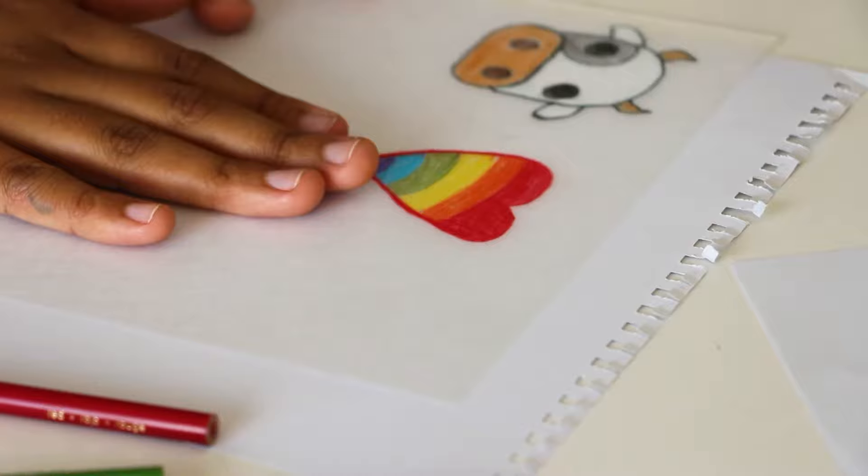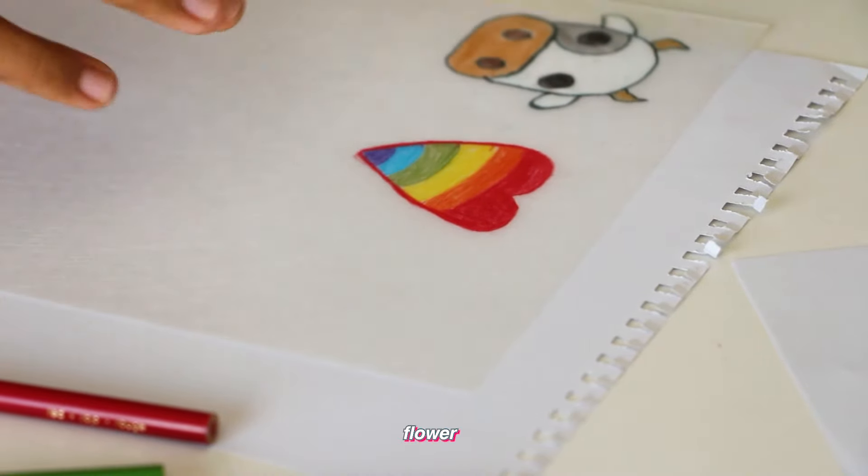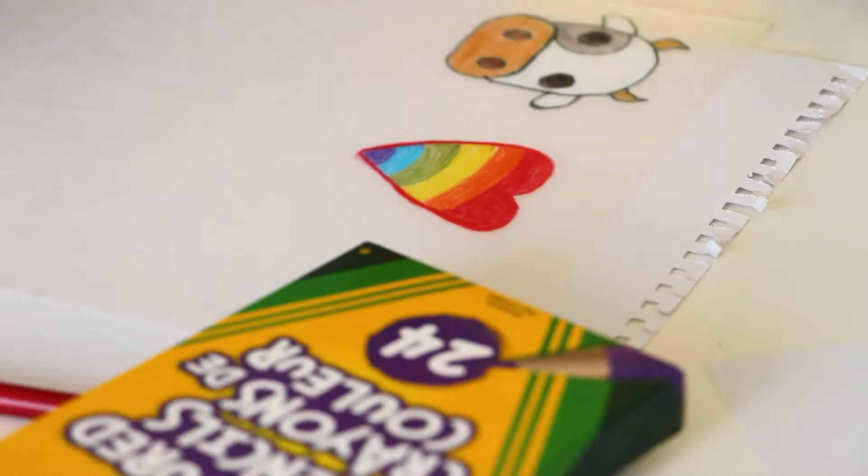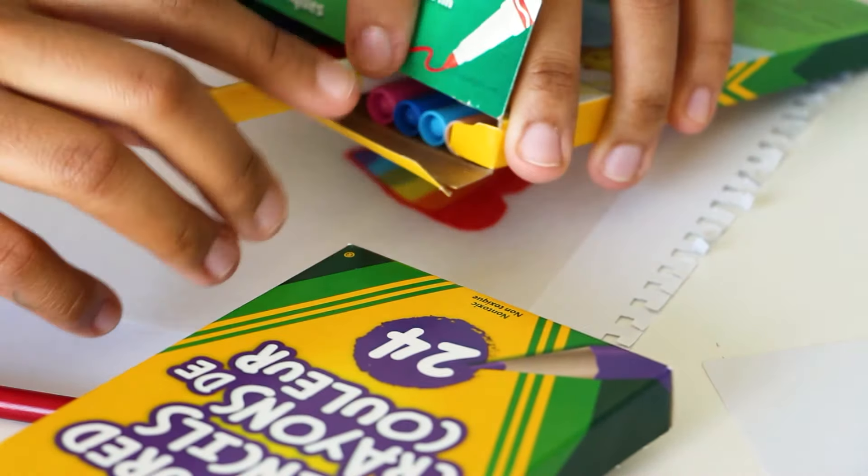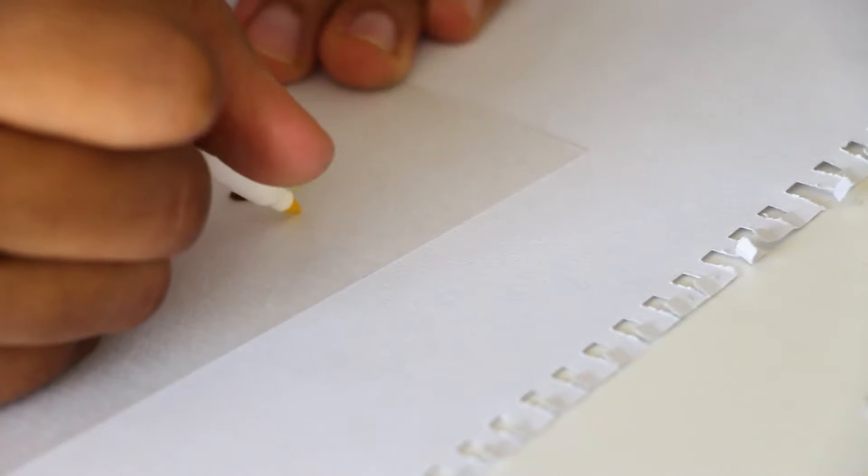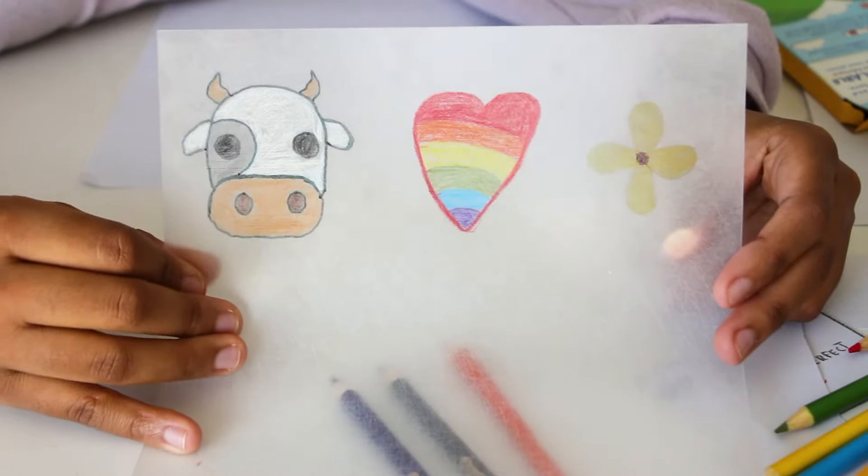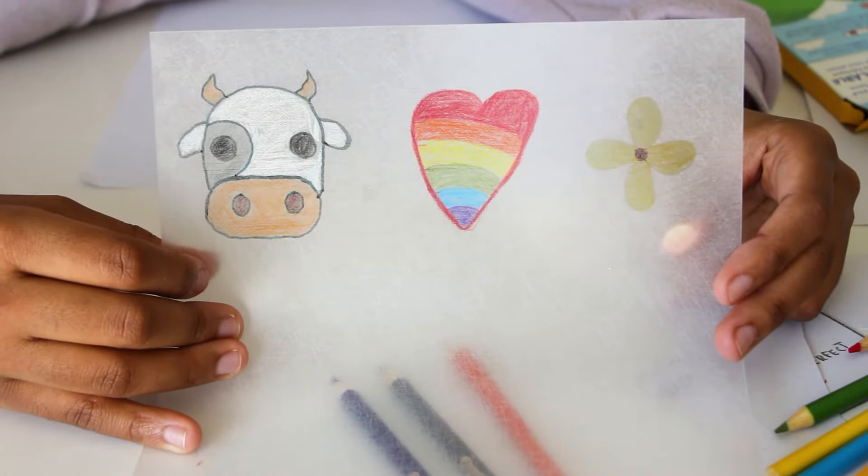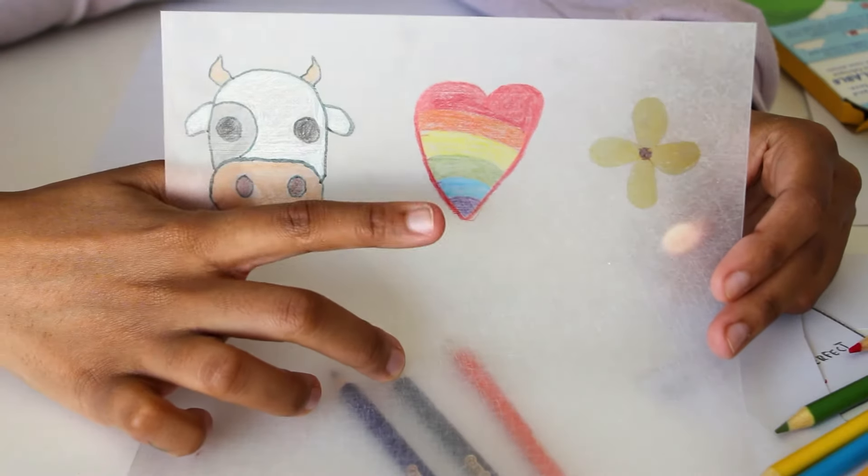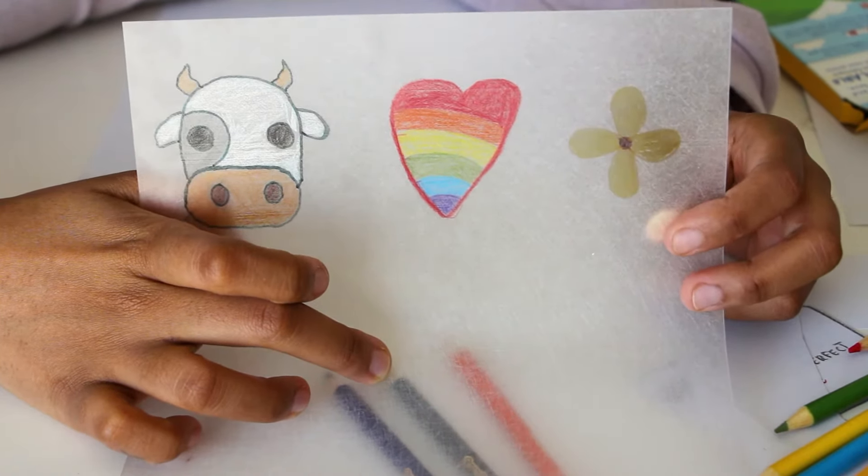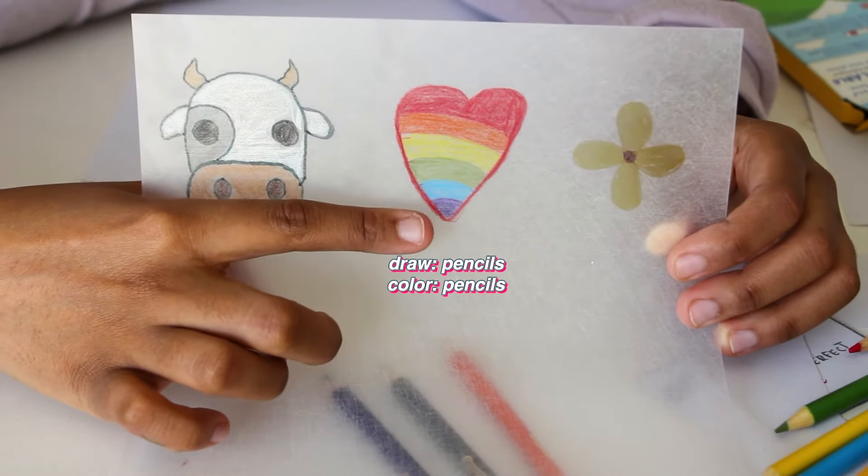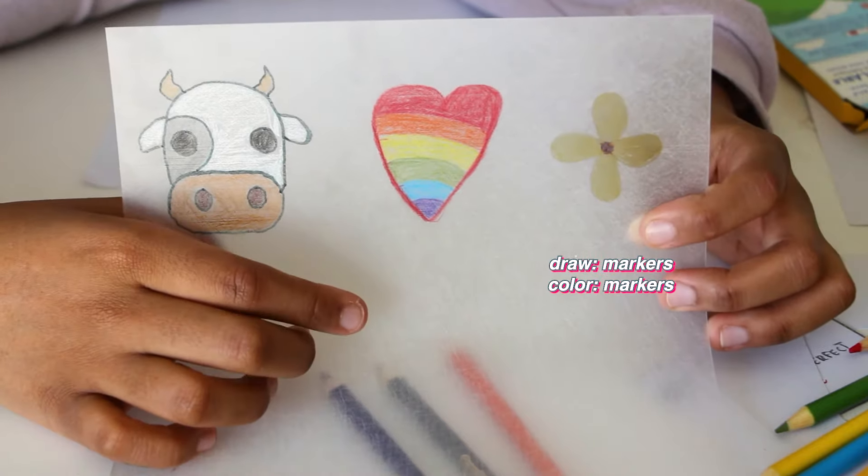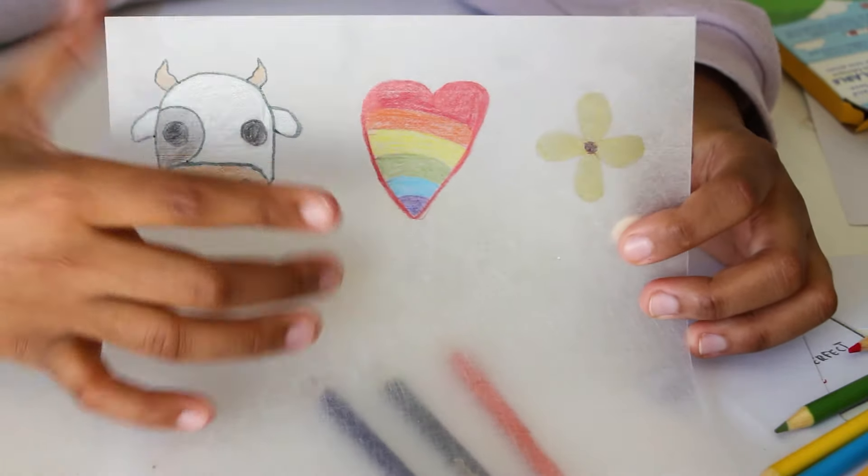Last but not least, I am going to do a flower and this time I'm only going to be using markers. I want to test to see if it's better to draw with pencil or draw with markers. This is the final drawing that I'm going to be turning into a keychain: we have a cow, we have a rainbow heart, and we have a simple flower. I tested - I drew with the marker and colored with the pencils here. Here I drew and colored with the markers. I want to test it out which one is better and which method is the best.